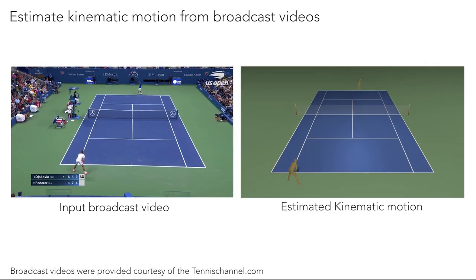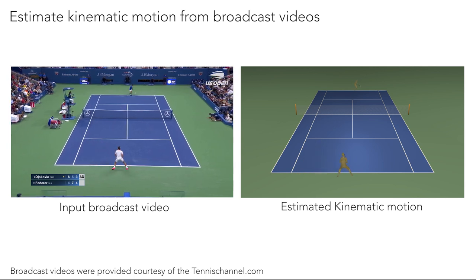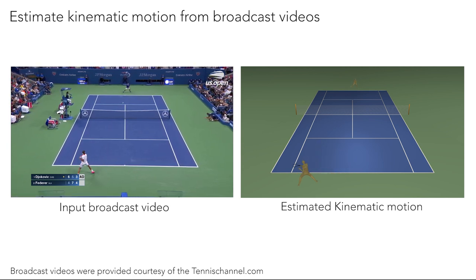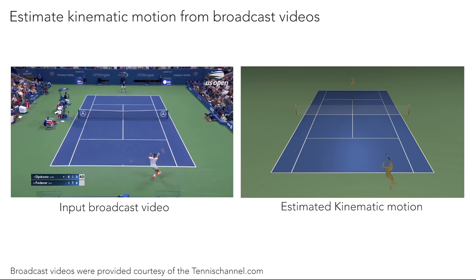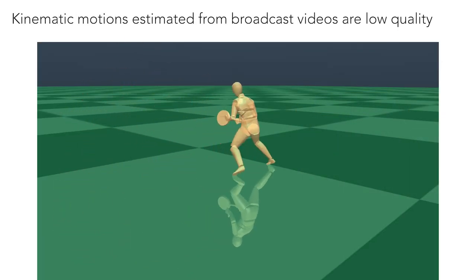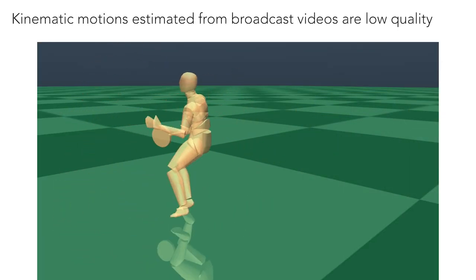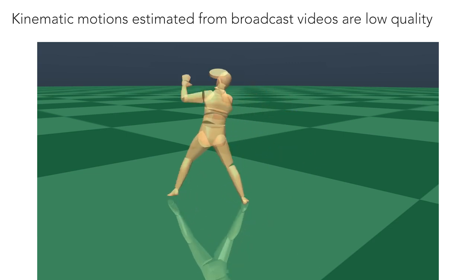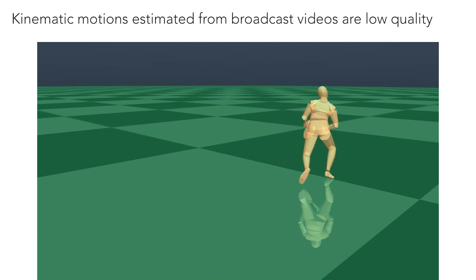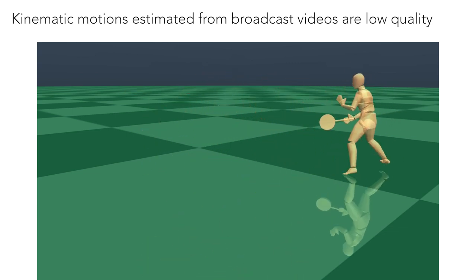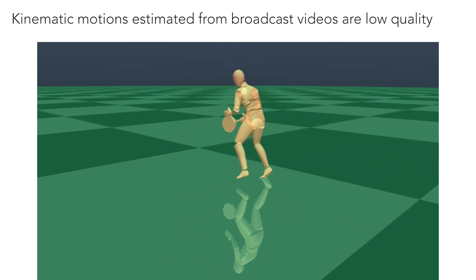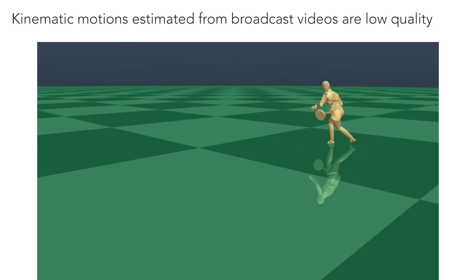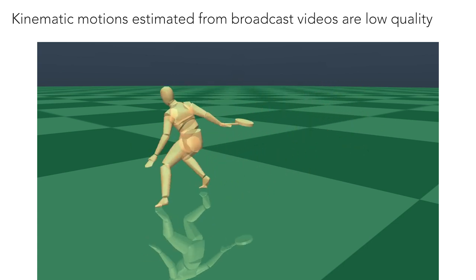To build our tennis motion dataset from raw videos, we use a combination of 2D and 3D pose estimators to reconstruct the player's poses and route trajectories. However, the estimated kinematic motions are quite noisy, with jittering and foot skating artifacts. More importantly, the wrist motion for controlling the racket is inaccurate, since it is difficult to estimate the wrist or the racket motion due to occlusion and motion blur.